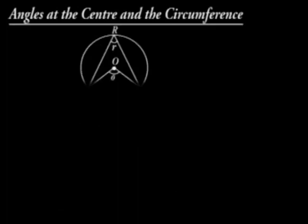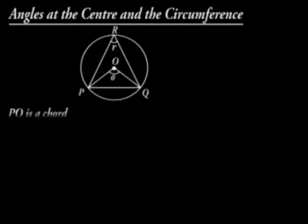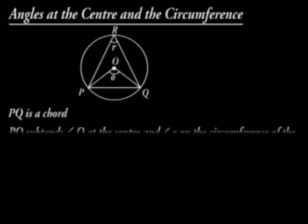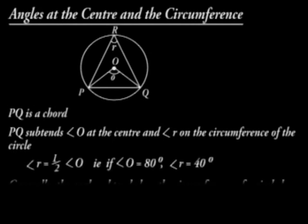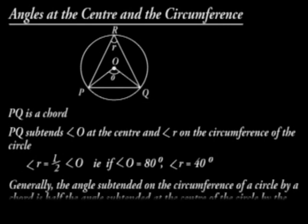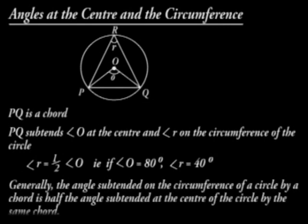Angles at the center and the circumference. PQ is a chord. PQ subtends angle O at the center and angle R on the circumference. Angle R is equal to half of angle O. That is, if O is 80 degrees, R is 40 degrees. Generally, the angle subtended on the circumference of a circle by a chord is half the angle subtended at the center of the circle by the same chord.